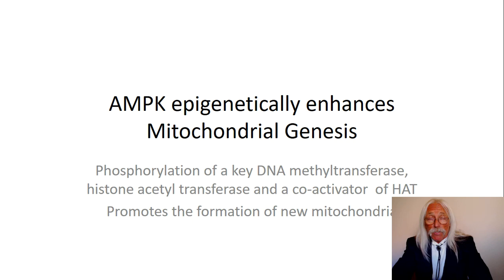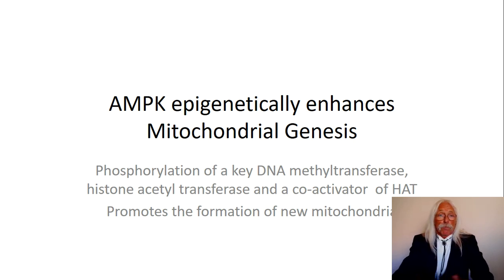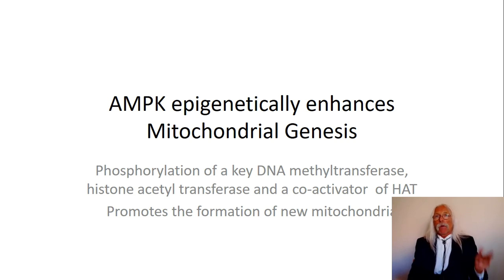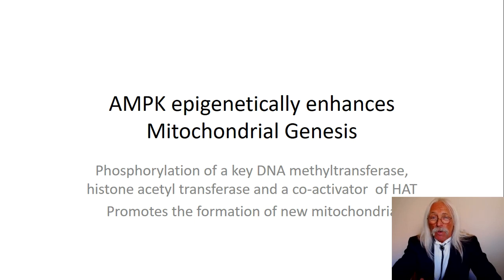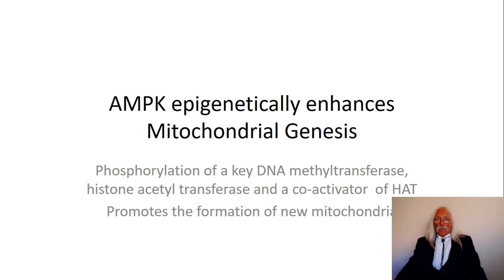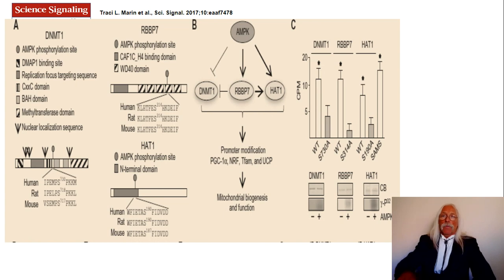AMP kinase epigenetically enhances mitochondrial biogenesis — that's a key take-home message. Phosphorylation of a key DNA methyltransferase (DNMT1) and a histone acetyltransferase (HAT) by AMP kinase, as well as a co-activator gene turned on via AMP kinase phosphorylation, all promote the formation of new mitochondria. The researchers in this Science Signaling paper were very careful to look at the fine granularity of the promoter regions of these genes.